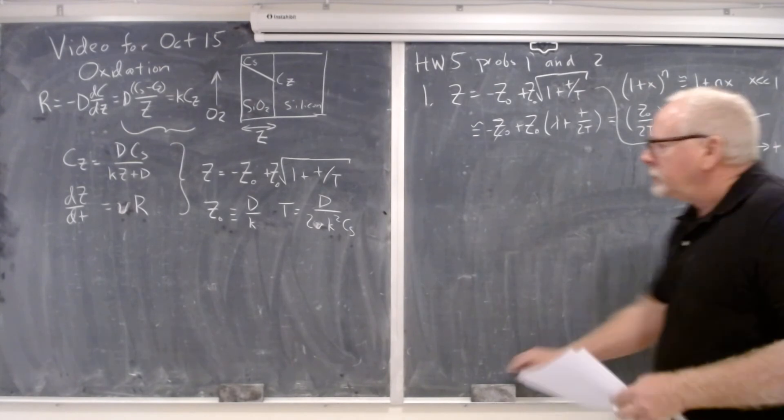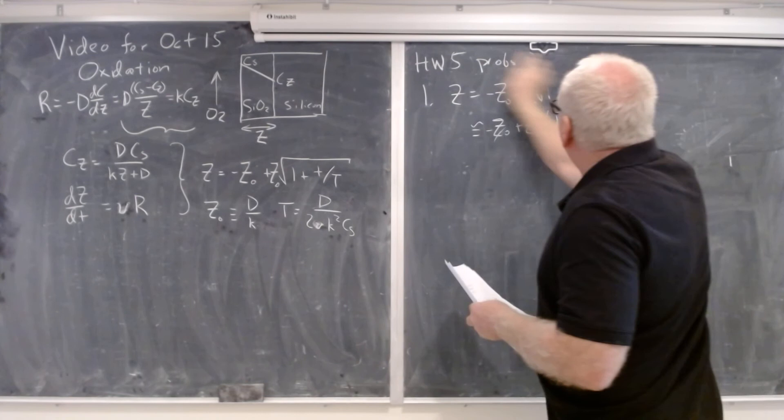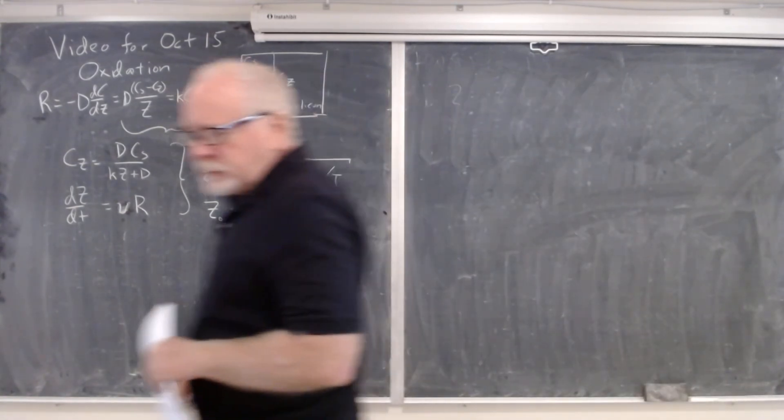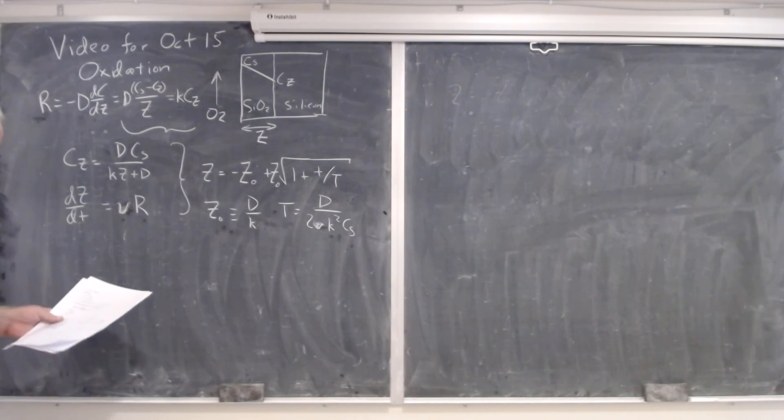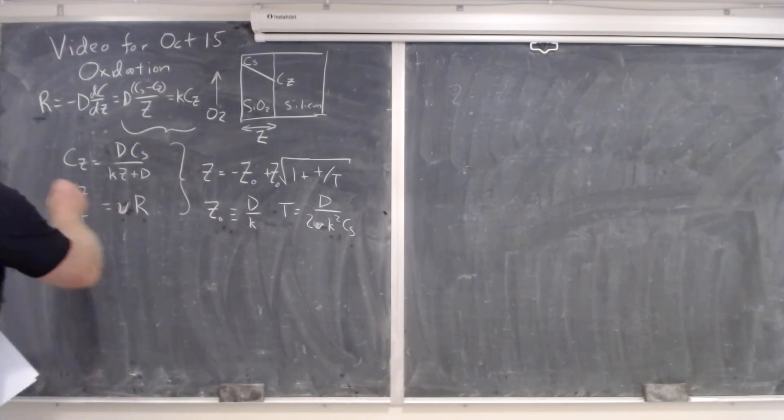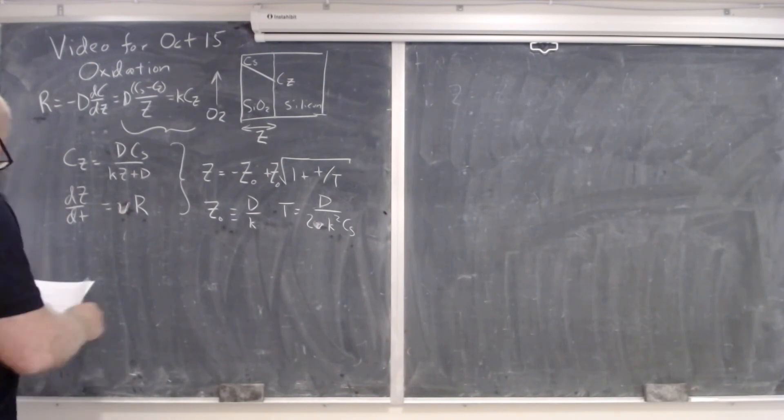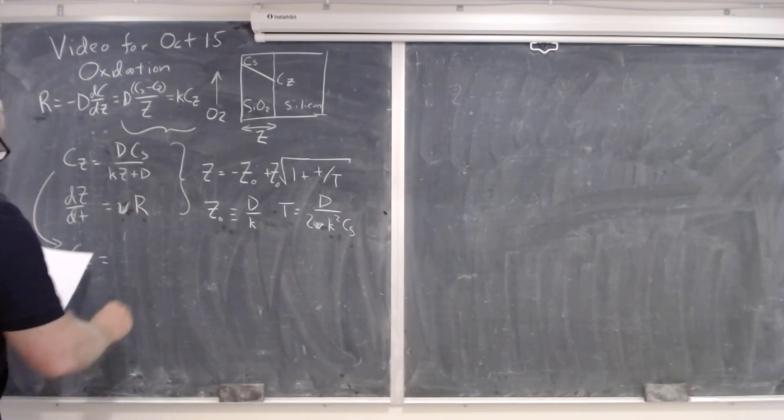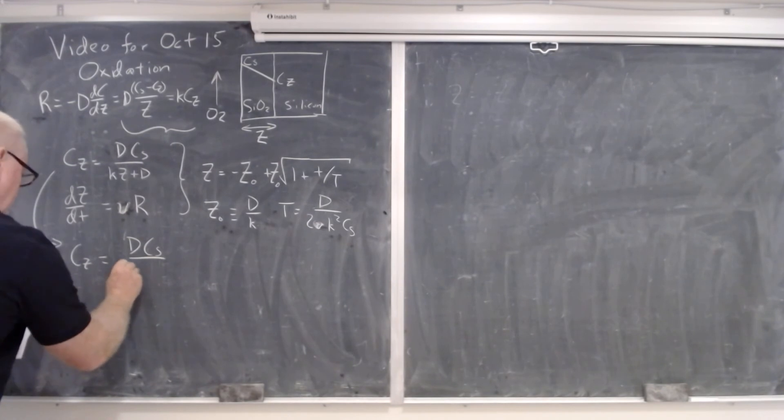So that was problem one. It really should have just taken you a few minutes to do it, so I didn't feel that it was unfair to ask you to do this by today. Now for problem two, you were asked to draw these curves. And in fact all the information is given to you. It's in the notes, we didn't really go over it last time. But if you take this solution for C sub Z and you plug in for Z, you get the CZ, the concentration at the depth, is equal to DCS over KZ plus D.